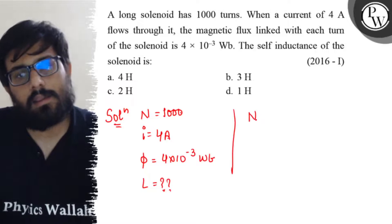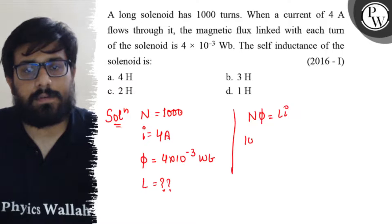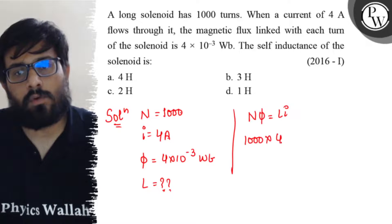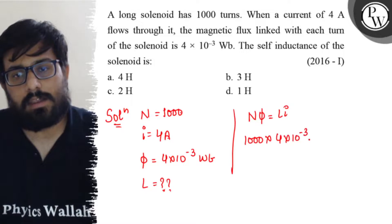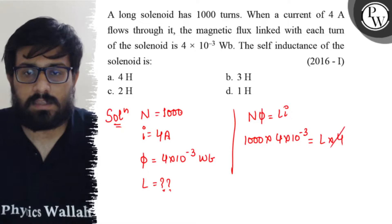We know the relation NΦ = LI. So N is 1000, the value of Φ is 4 × 10^-3, equals L times the current which is 4. The 4 cancels out.